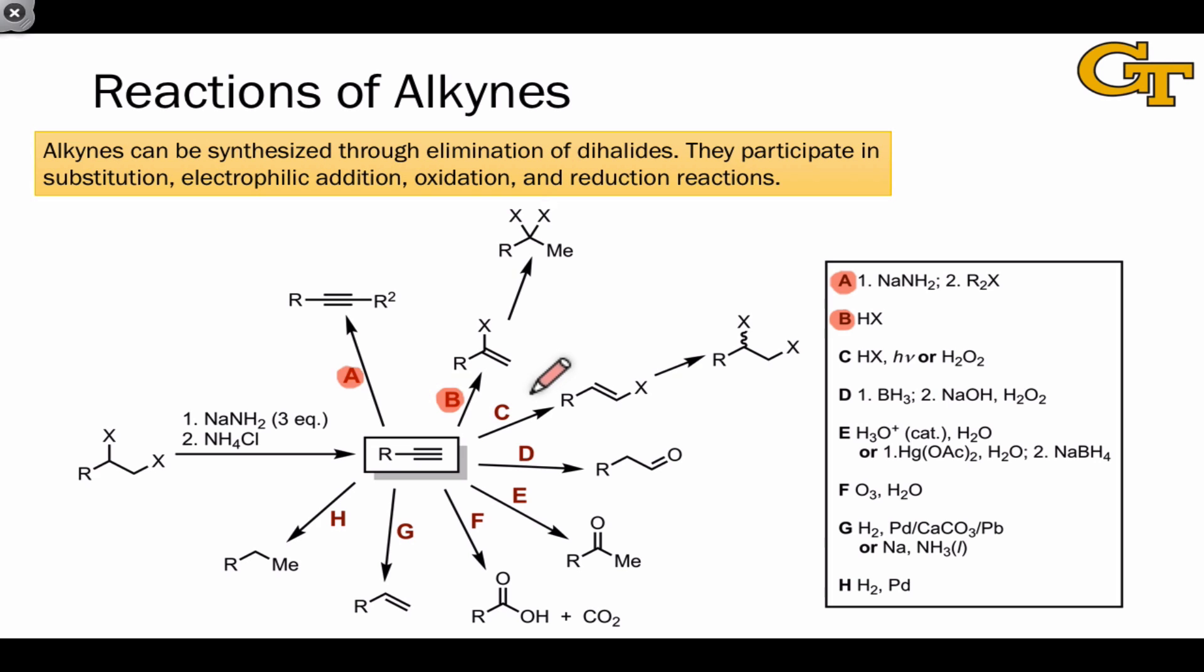When we use conditions that promote the formation of radicals along with HX, we get the anti-Markovnikov or less substituted alkenyl halide product, and a second addition here produces a vicinal, or 1,2 dihalide product.